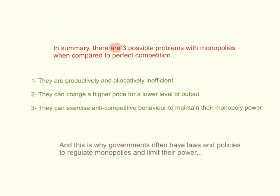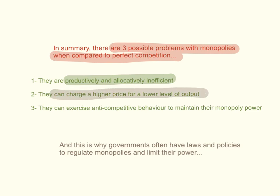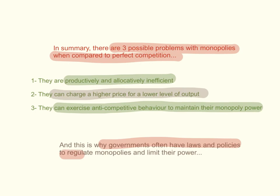To summarize, there are three possible problems with monopolies compared to perfect competition. First, monopolies are productively and allocatively inefficient. Second, they can charge a higher price for a lower level of output by restricting output to earn abnormal profits. Third, they often exercise anti-competitive behavior to maintain their monopoly power. These are the reasons why governments often have laws and policies to regulate monopolies and limit their power — though government policies to regulate monopoly power have their own advantages and disadvantages, to be discussed in a later video.